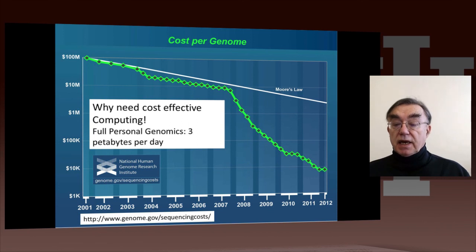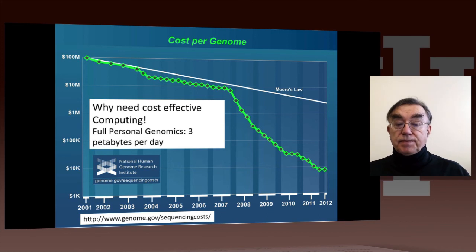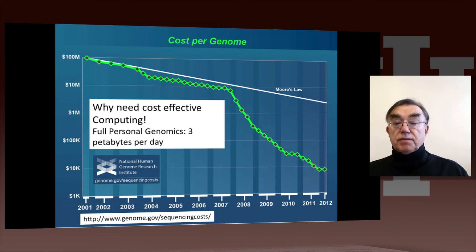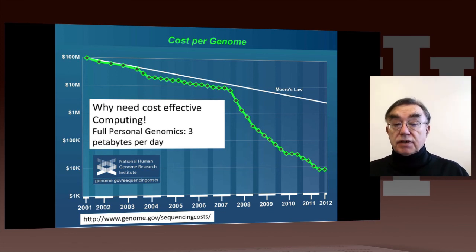Now that's over a factor of 100 difference, which points out a well-known observation: if you ask how much computing it takes to process these genomes, the computing cost is getting more and more significant, because the cost of getting the data is going down so much faster than the cost of computing.